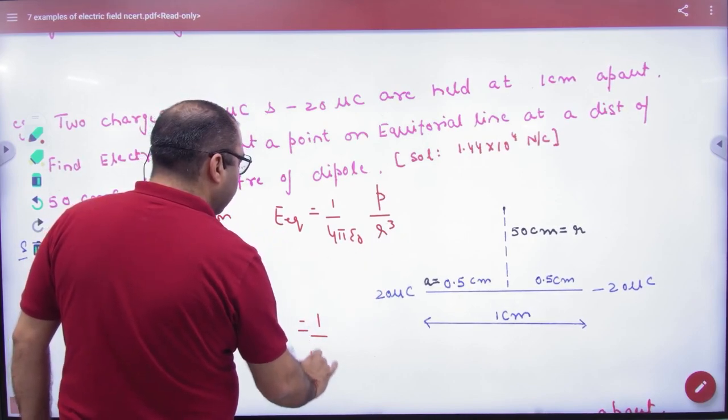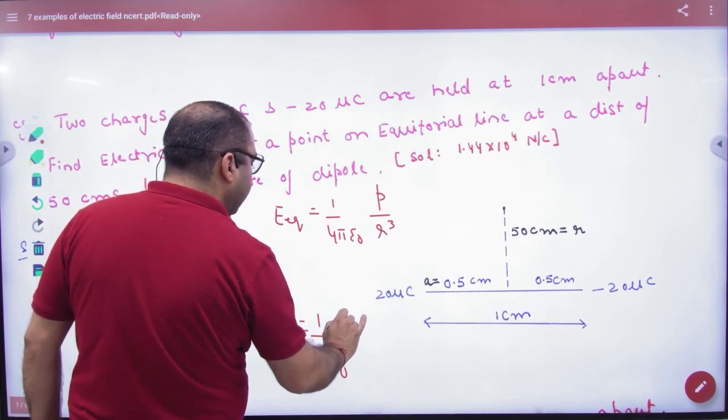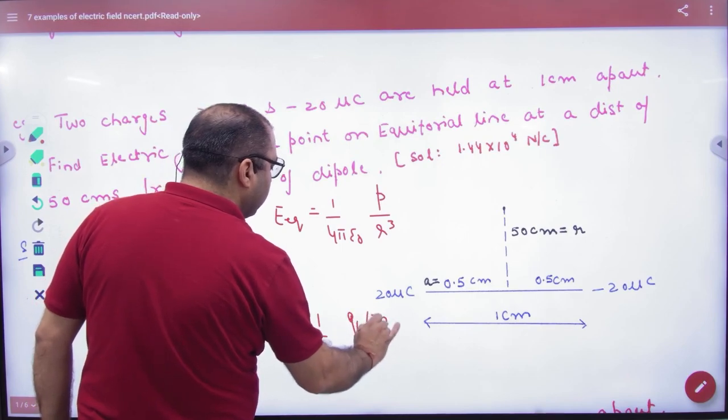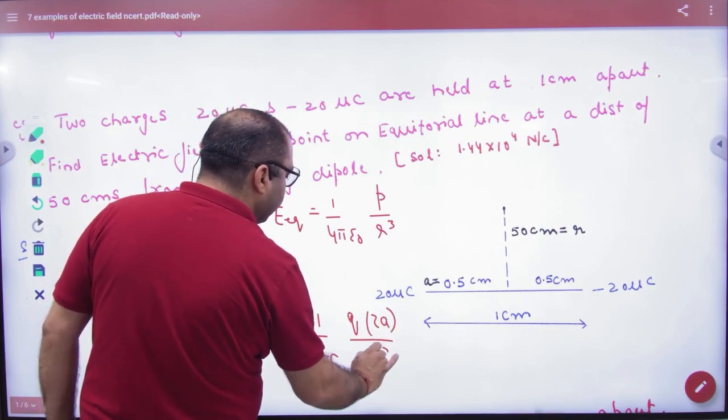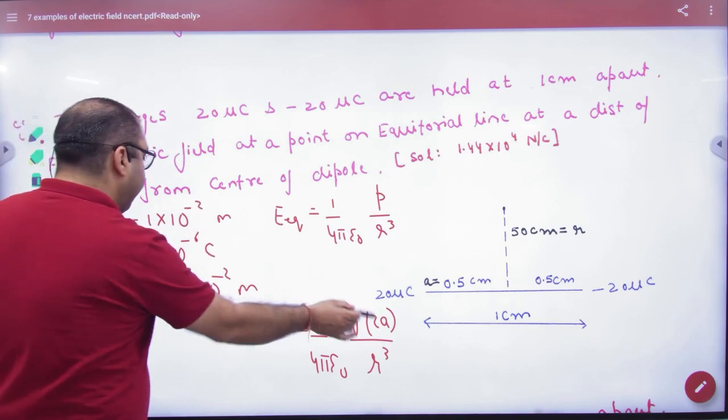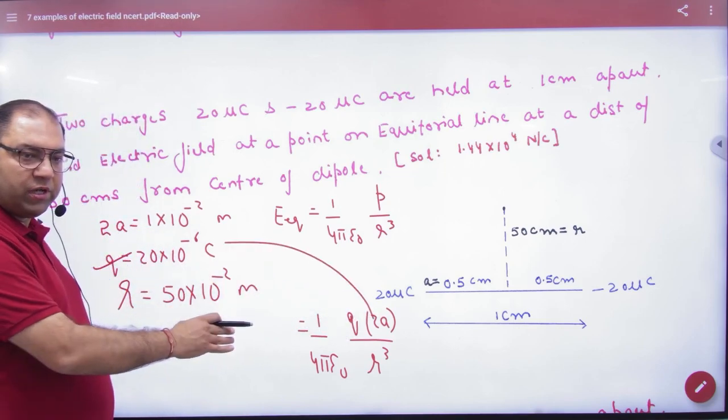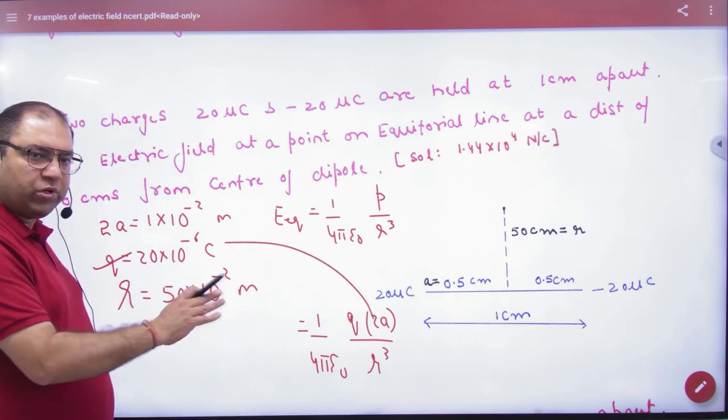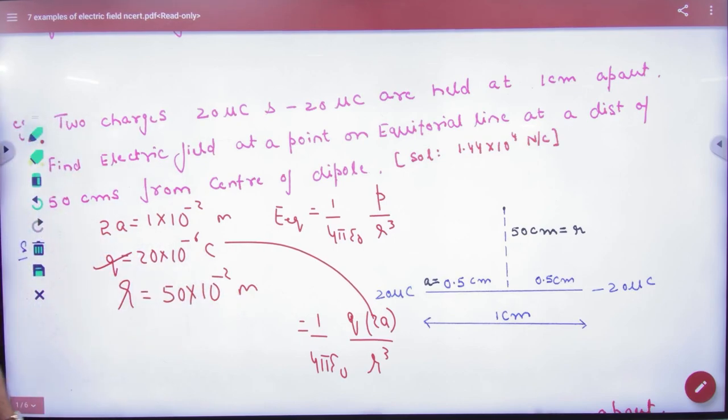And in the next line, 1 by 4 pi epsilon 0, P which is q into 2a divided by R cube. Charge, you know. 2a value, you know. Value put by R, you know. Value put by Newton. So, the method is coming. E equatorial formula.